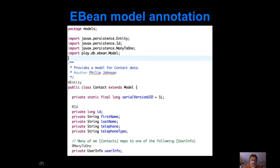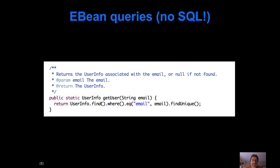As an example, what you're going to be doing with your models is adding annotations like the @Entity annotation. You'll be extending a Model superclass which provides a save method for persisting your classes. You'll need to add a serialVersionUID and then add a primary key field annotated with @Id. When we have relationships — in this case a many-to-one relationship where many contacts map to one UserInfo — we'll provide that annotation as well.